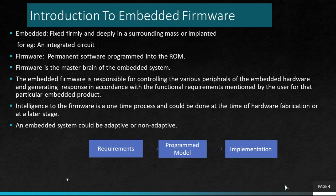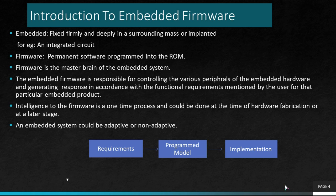Next is imparting intelligence to the firmware. Intelligence to the firmware can be imparted at any time and is considered a one-time process. It can be done either once the fabrication of the hardware is complete, or at a later stage. Once the intelligence is imparted, the firmware is embedded to the hardware and the functioning of the embedded product begins, and continues unless any hardware breakdown or firmware corruption occurs. In case of hardware breakdown, the affected component can be replaced and functioning resumed.